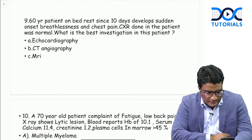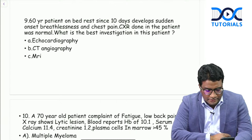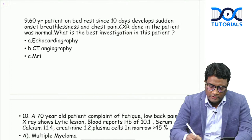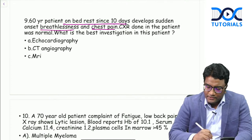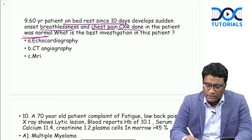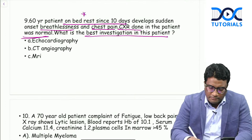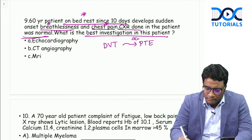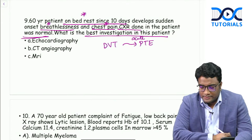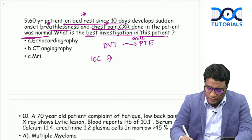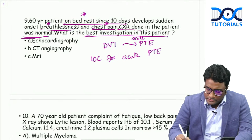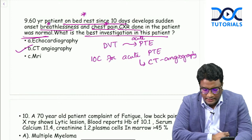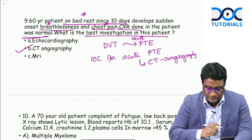A 60-year-old patient on bed rest for 10 days develops sudden onset breathlessness and chest pain. Chest X-ray was normal. You should think of DVT progressing into pulmonary thromboembolism. The investigation of choice for acute pulmonary thromboembolism is CT angiography. So the best investigation here is CT angiography.